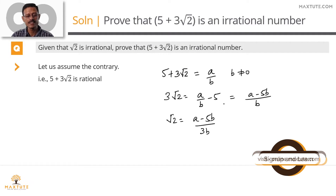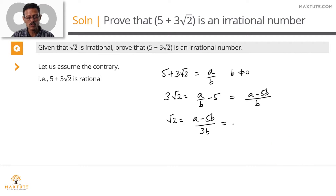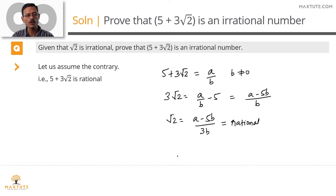Now, a is an integer and b is an integer — that's the assumption we made. So a − 5b will be an integer, and 3b will also be an integer. An integer divided by an integer means this number has to be rational. So we have ended up with (a − 5b) / 3b being rational, which means root 2 should also be rational.